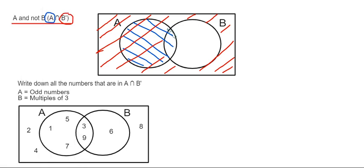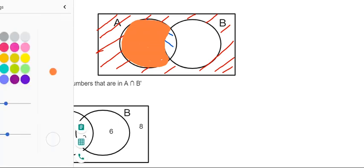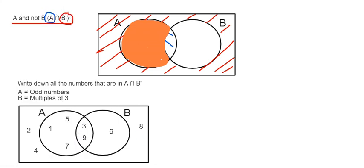That's this part of the Venn diagram. So let's move on then to the example below. We've got to write down all the numbers that are in A and not B. So in set A we have the odd numbers.